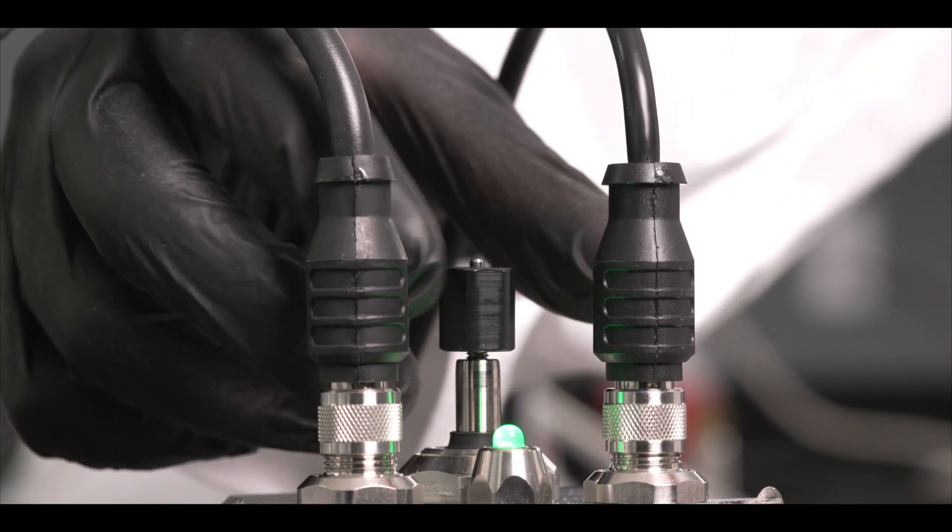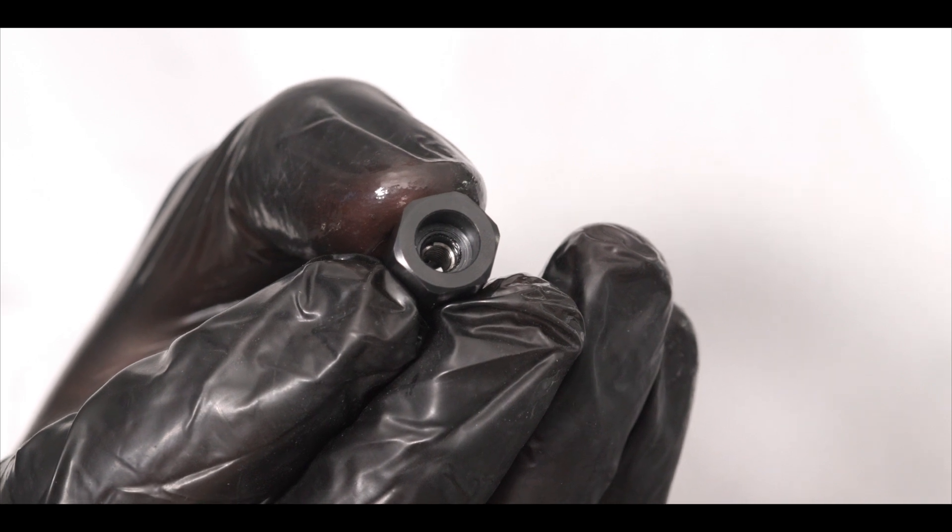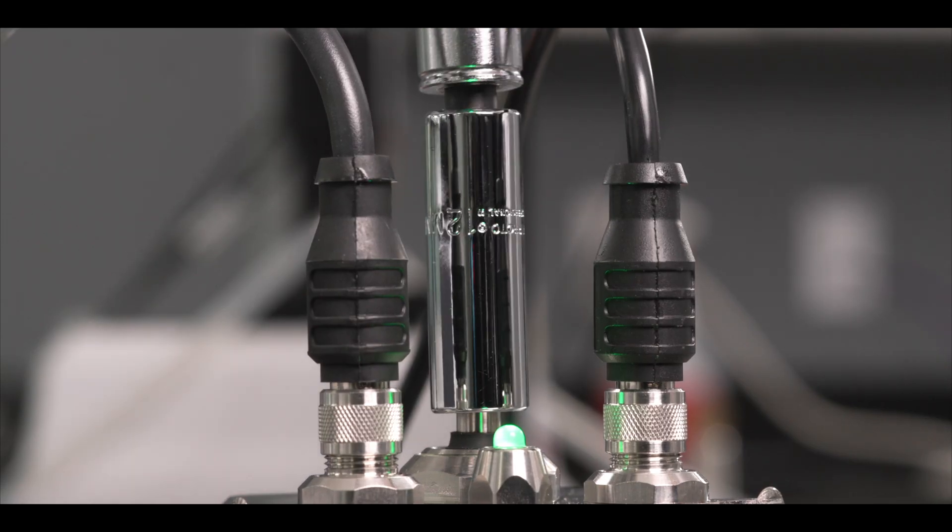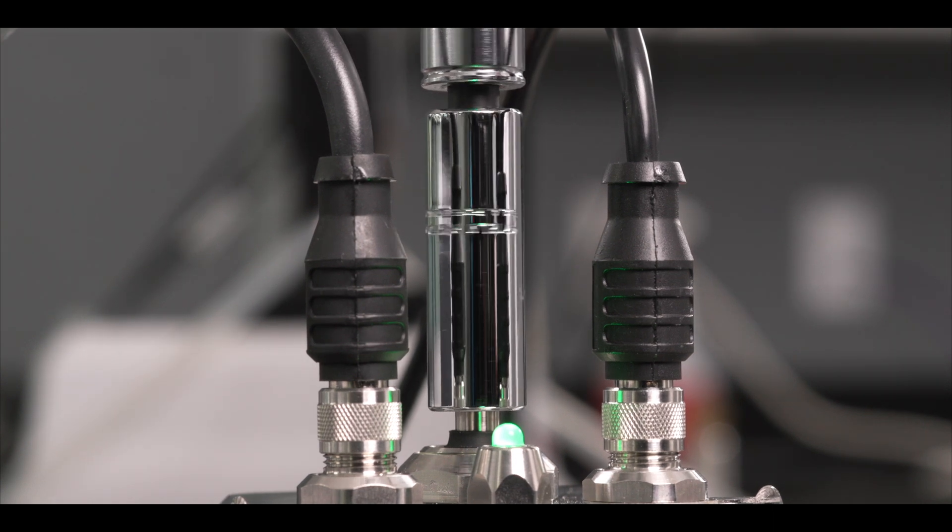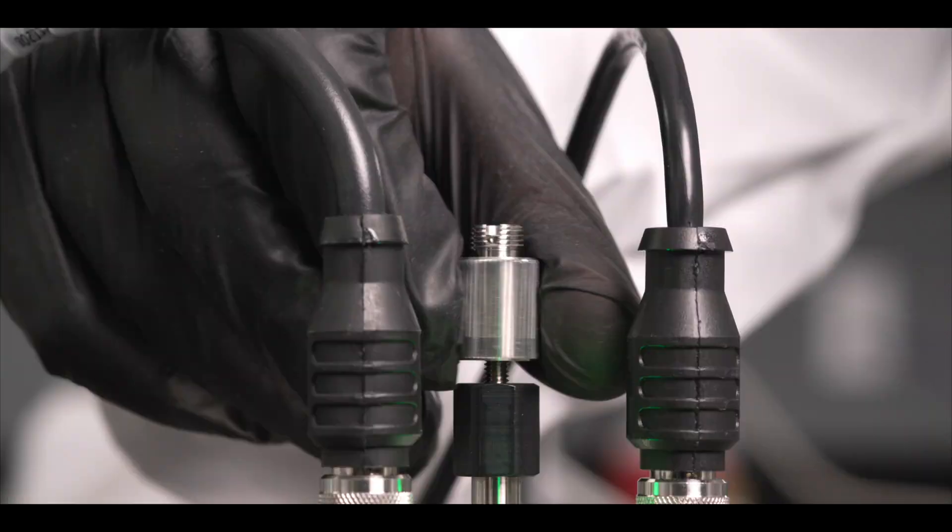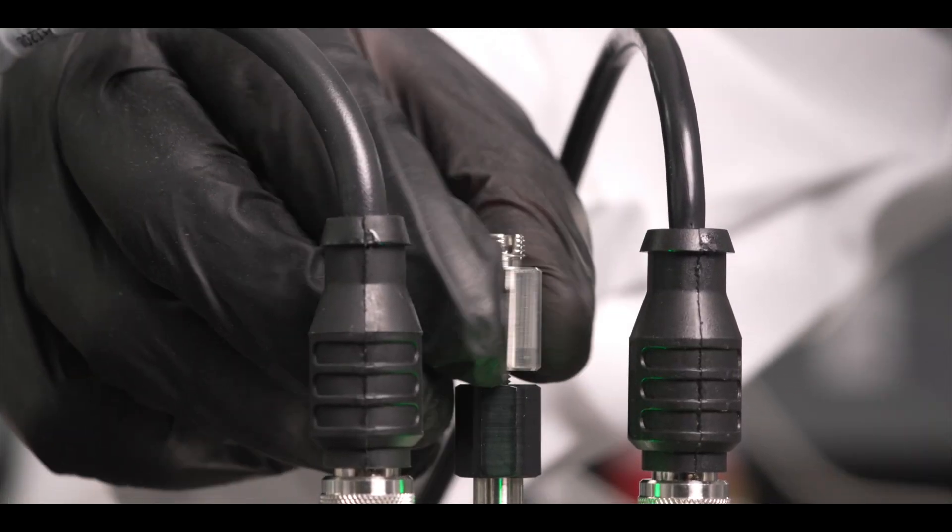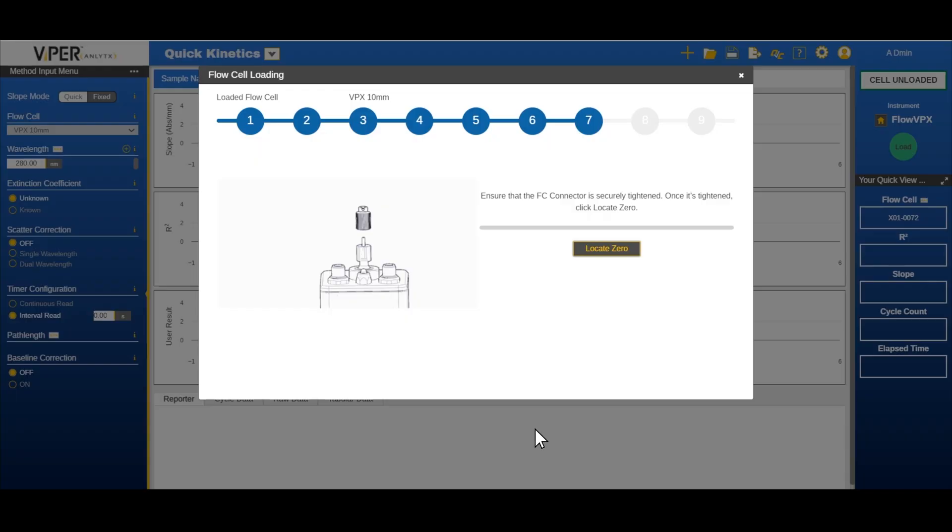Place and tighten the FX connector nut onto the fiber optic component with the larger diameter hole facing down. Tighten with the provided 12 pound torque wrench until there is an audible click. Place and hand tighten the FC connector nut above the FX connector nut. Once it's tightened, click locate zero.